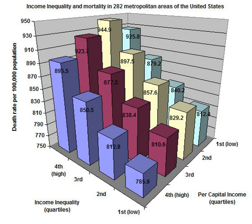There is a very robust correlation between socioeconomic status and health. This correlation suggests that it is not only the poor who tend to be sick when everyone else is healthy — conditions including heart disease, ulcers, type 2 diabetes, rheumatoid arthritis, certain types of cancer, and premature aging follow this pattern.